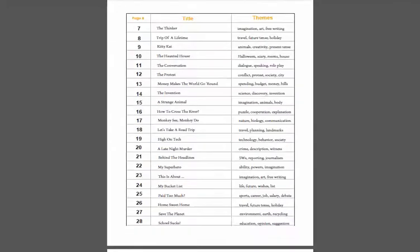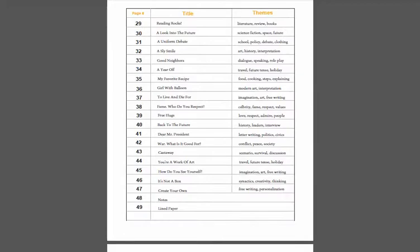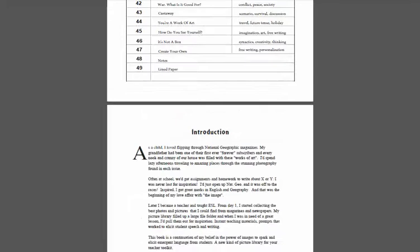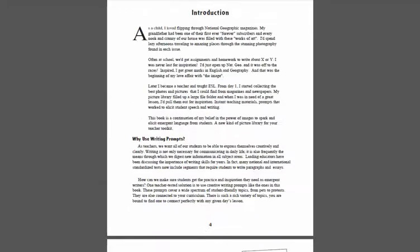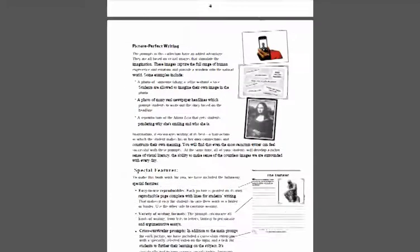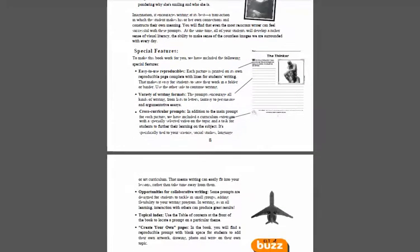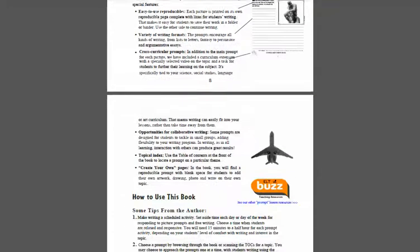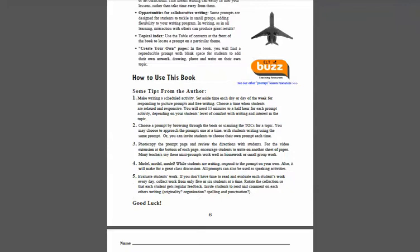We've got a table of contents — there are 45 individual lessons, each contained on one page. Here's the introduction, where I go through the rationale for writing this book and using images to get students writing and speaking in English. I also have a section that shows you the special features of the book, and a section on how you might use this book in class.